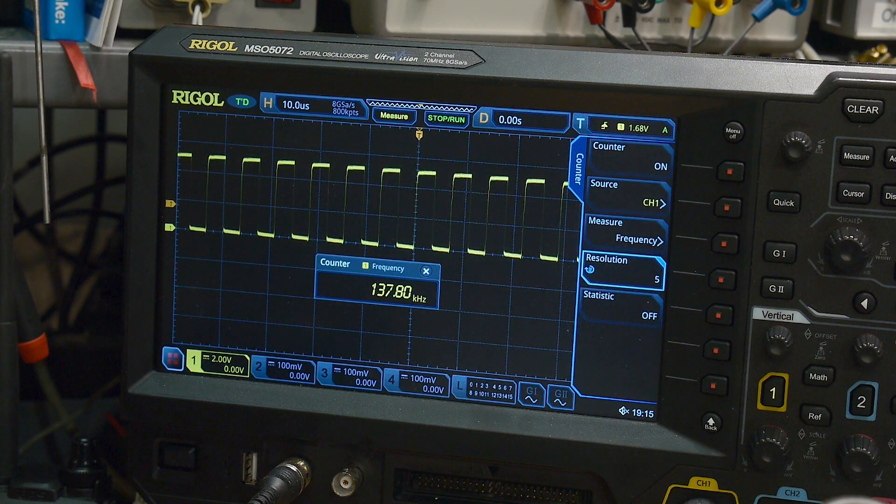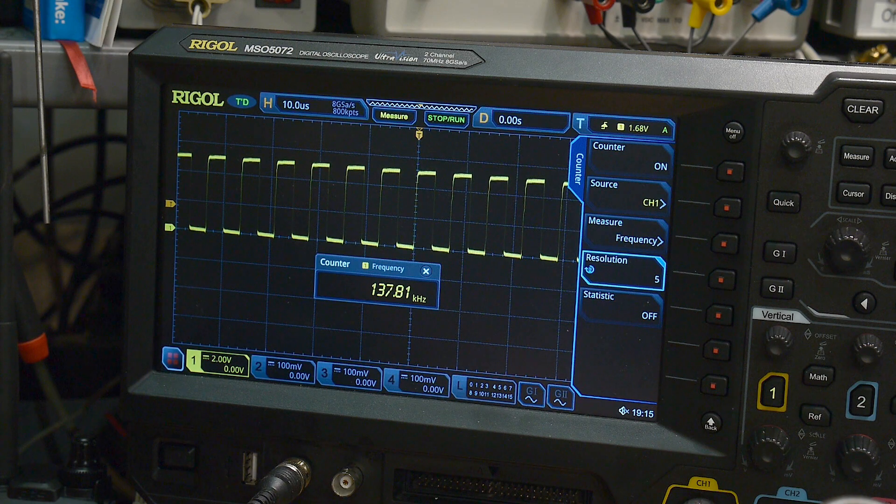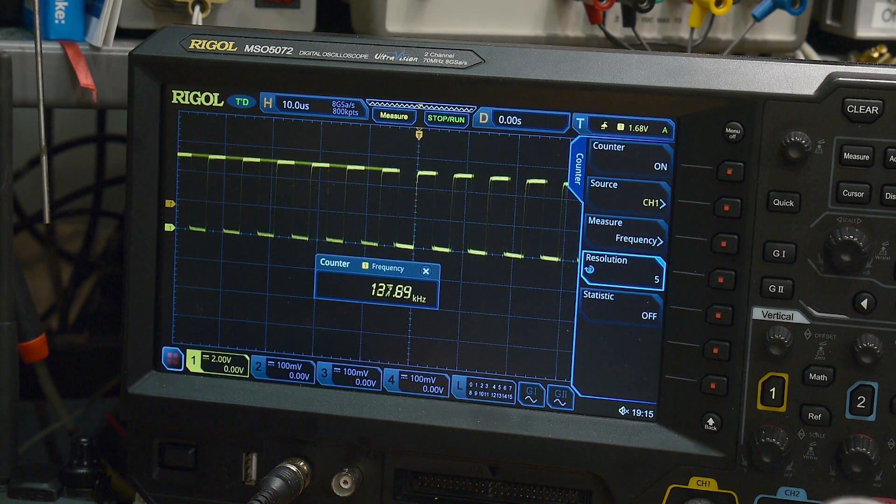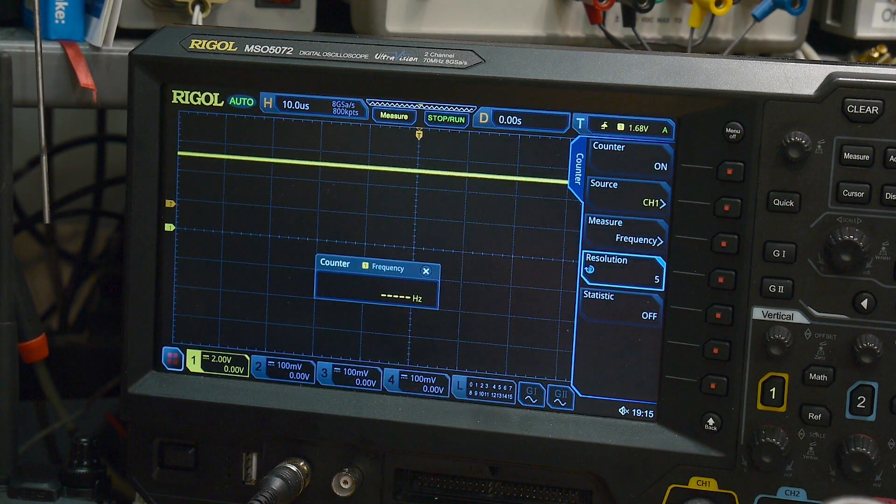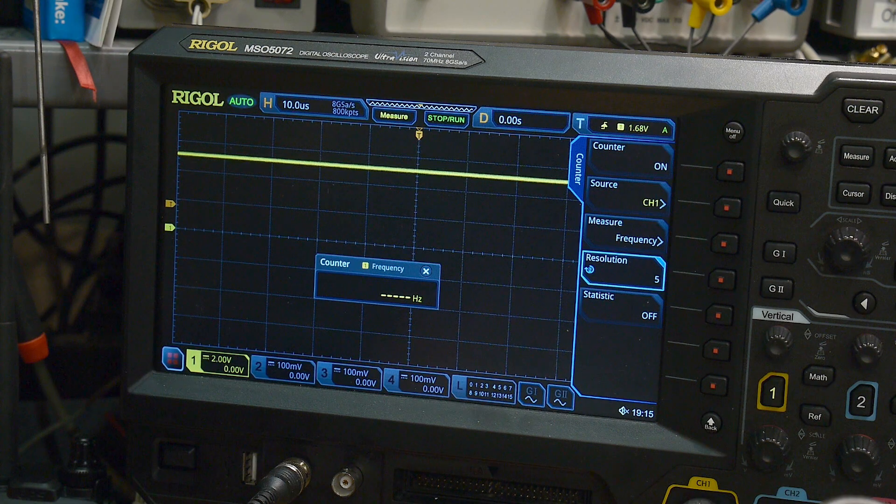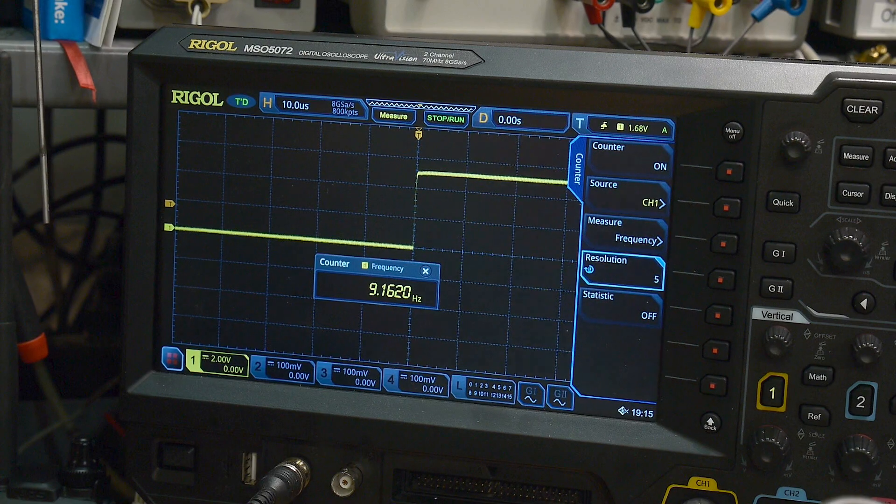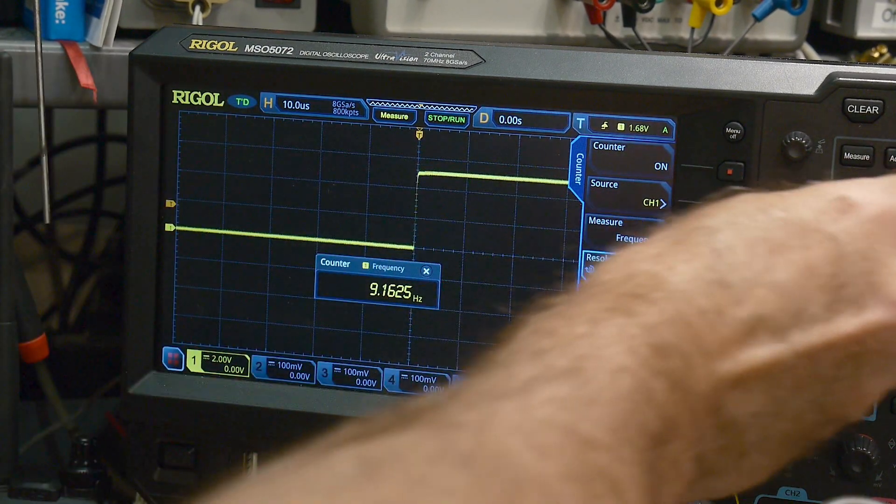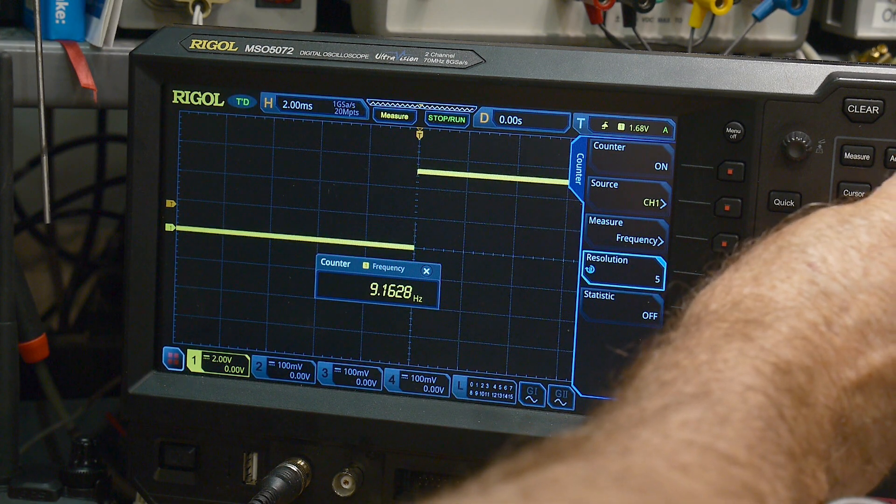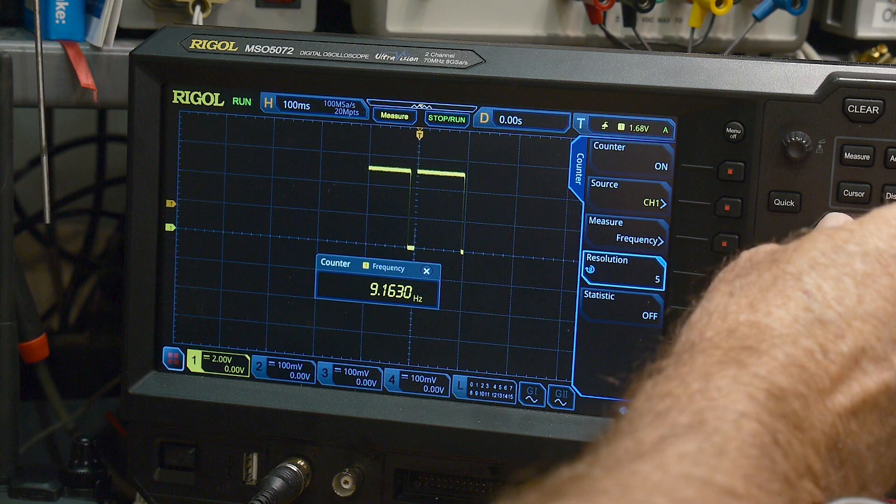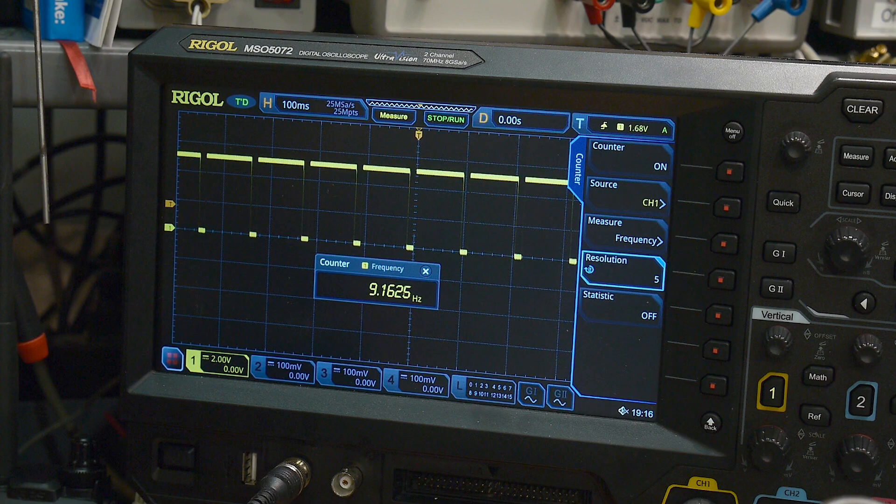So we went from 0.01 or 10 nanofarads, so we went from 10 nanofarads to 180 picofarads. Let's go in the opposite direction. Let's go to 10 microfarads. I think it'll work if we put a 10 microfarad in the circuit. Well, the counter says 9 hertz. So let's back our oscilloscope out quite a bit. And there we go, 9.16 hertz. So very, very slow.